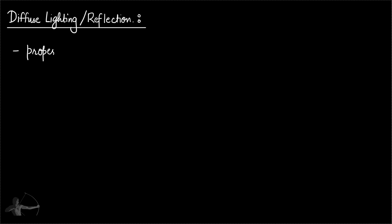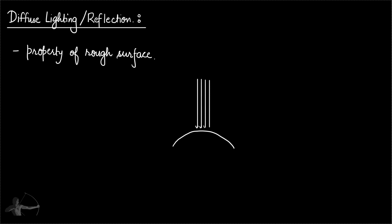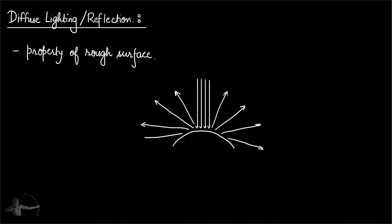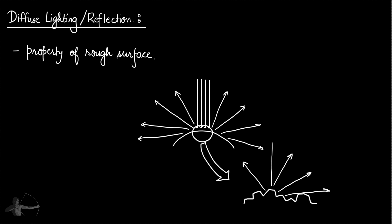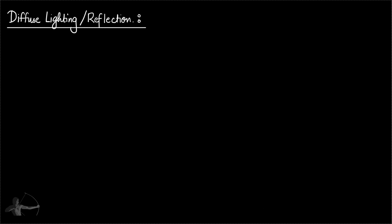Diffuse reflection is the property of rough surfaces. An ideal rough surface is one that is rough enough to reflect the light in all directions equally. So when light falls on the surface, it is scattered in all directions equally. If we see the magnification of the surface, it is so rough that it reflects light in every direction. But in reality, there is no rough surface that equally reflects light in all directions.